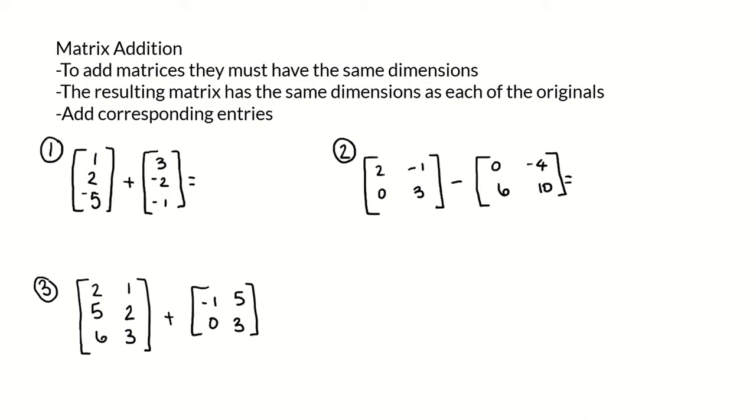So example one: we have [1, 2, -5] plus [3, -2, 1]. Those are both 3×1 matrices - three rows, one column - so we can add them together because they're exactly the same size, and the result is going to be a 3×1 matrix.